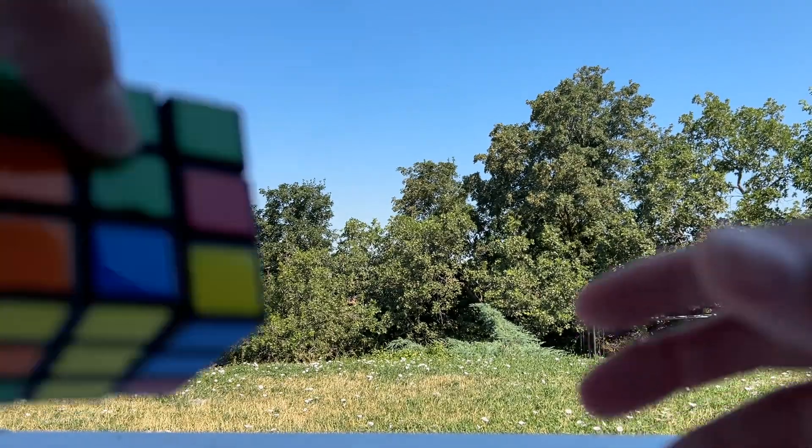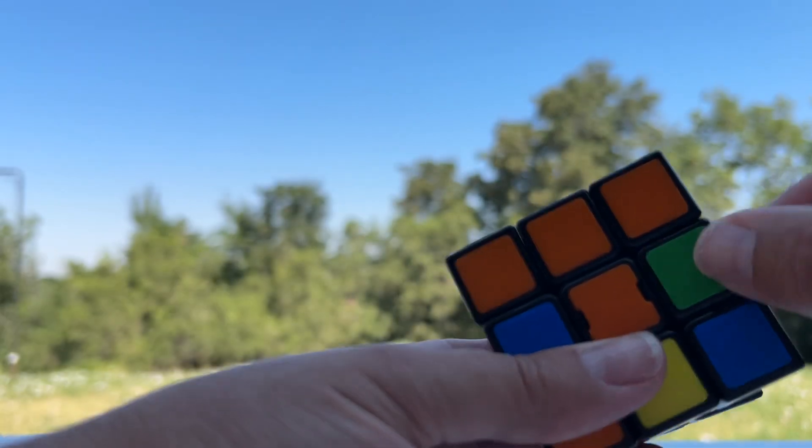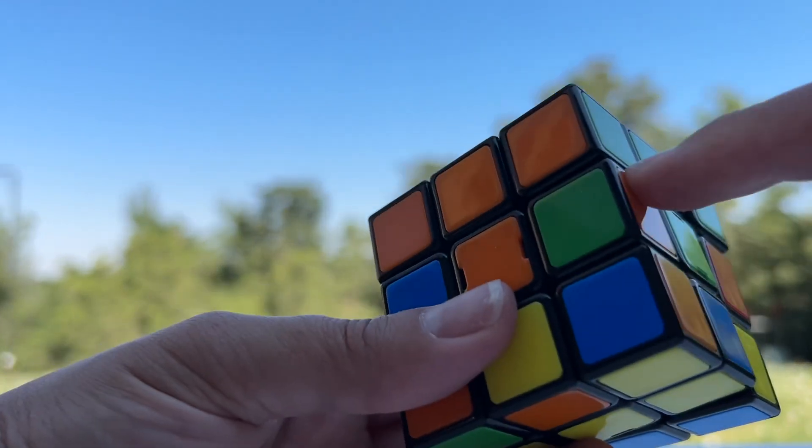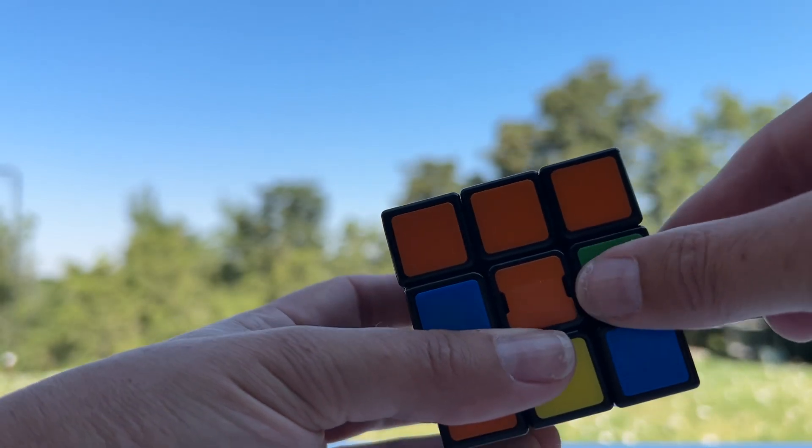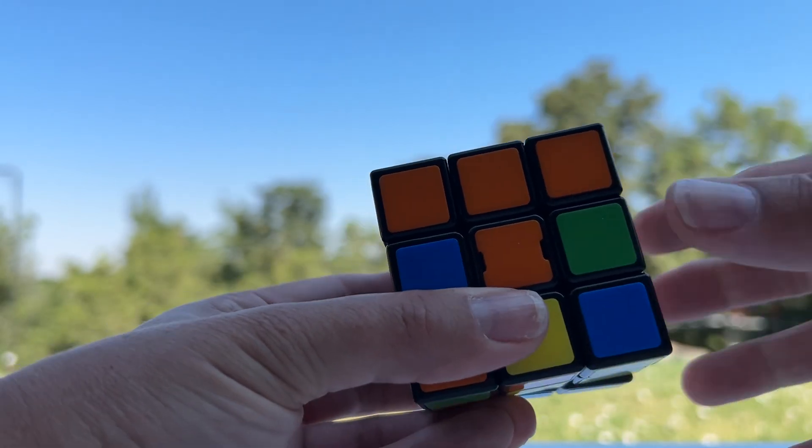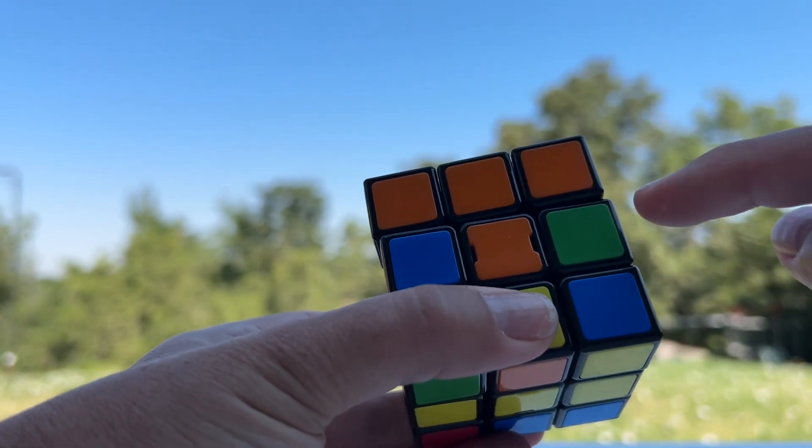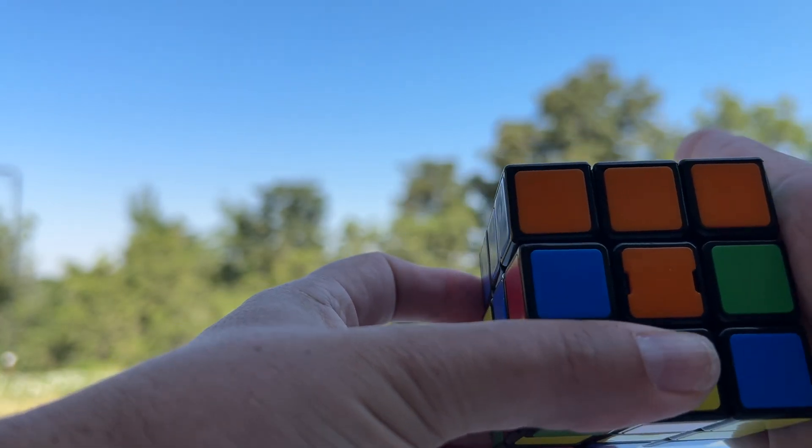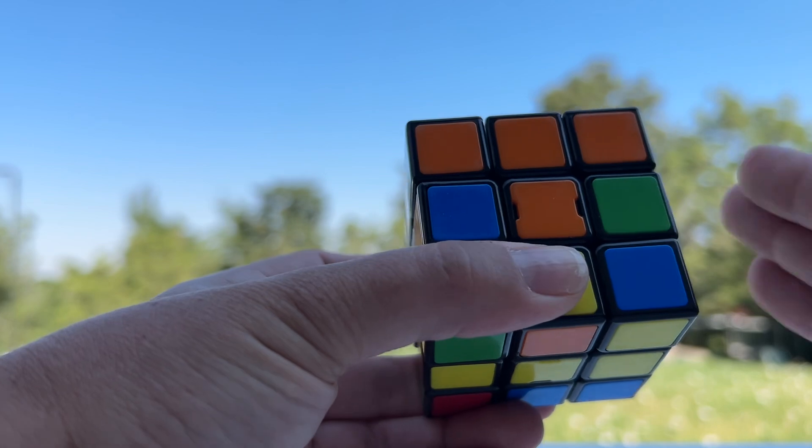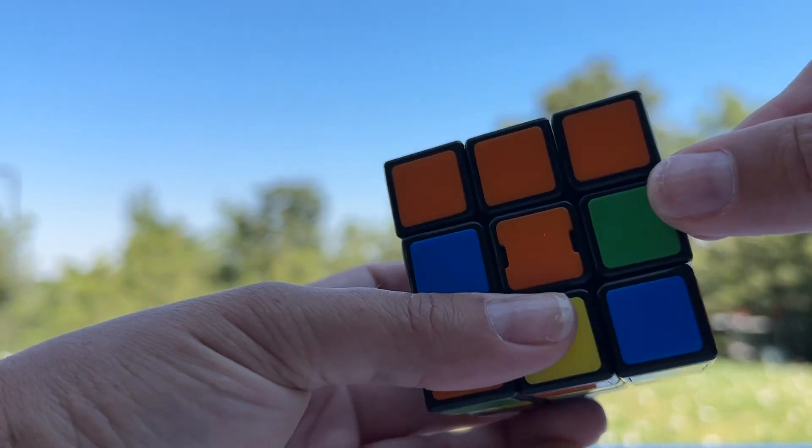Now sometimes you're going to be super duper frustrated and you're going to see that it's right here, it's in the right spot but it's turned around. You just want to yank it out and flip it around, but we're not going to do that. So what we're going to do is that piece we want to move, we're going to hold it so it's facing the front and it's on our right side right here. This is the piece we want to take out.